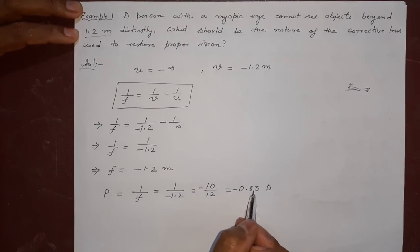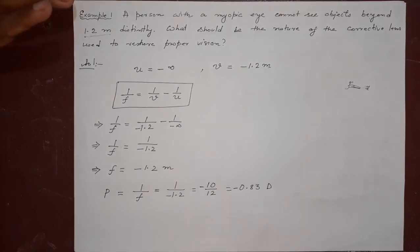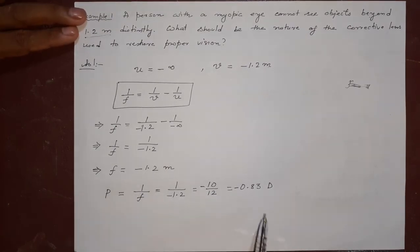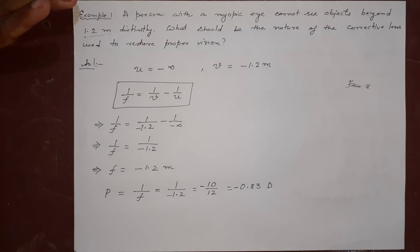So the power of the lens is -0.83 diopter. It is a concave lens. That is your answer. Directly you can also write f = -d = -1.2, then divide 1 by it and get this answer. This is the easiest question. Thank you.